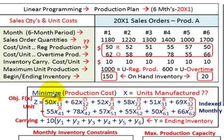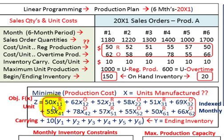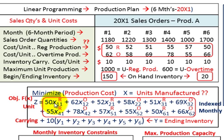In our objective function, what we have to do is minimize those production costs. The variable x equals the units that we have to manufacture, and the variable y is the number of units in ending inventory. Our objective function will have the unit cost for those six months in regular production, plus whatever we produce in overtime, plus the carrying costs for each of those six months.